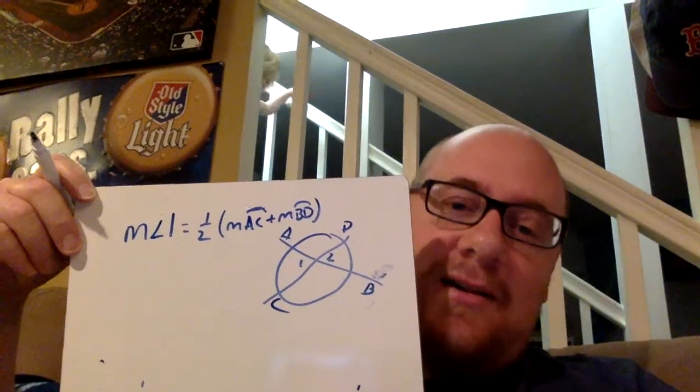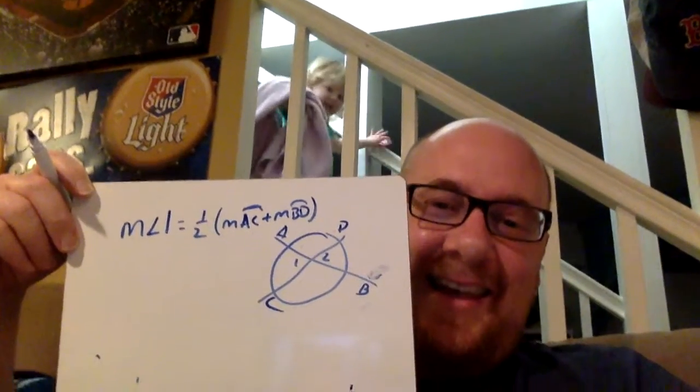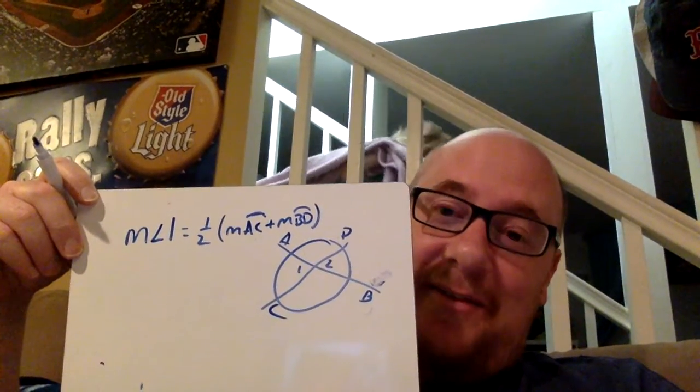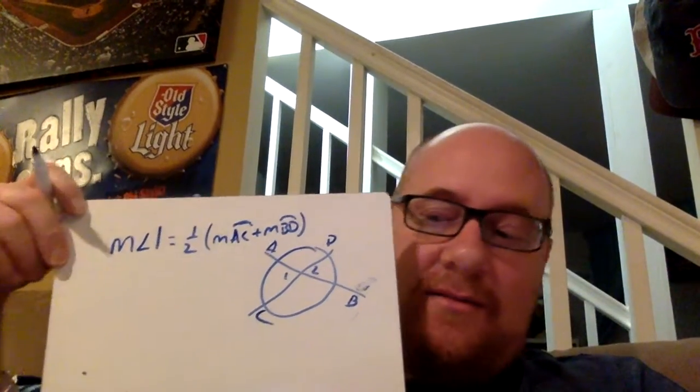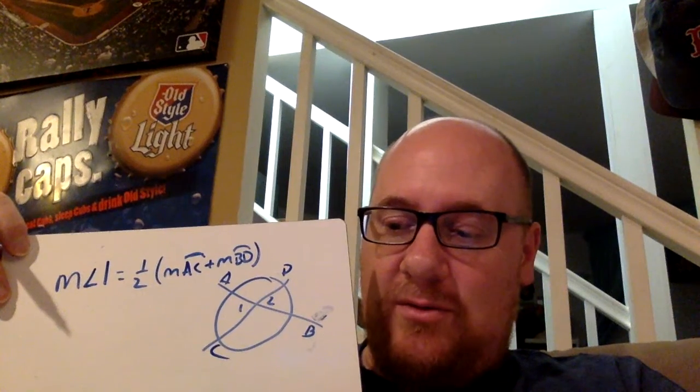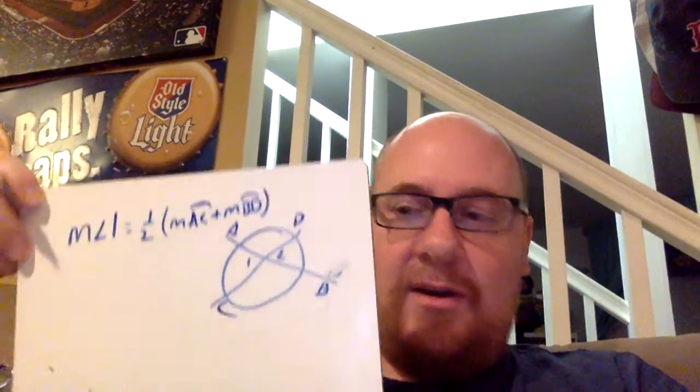Hi Mallory, are you going to come downstairs and say hi? Welcome to life at home teaching. It gives you an example for finding the measure of angle two also. I'm going to do another example here in a minute. I can only make up to five-minute videos — for whatever reason it doesn't save on my computer. So these are going to be really short, but I'm going to make a couple today just to give you a rundown of everything that needs to happen.